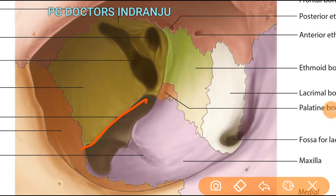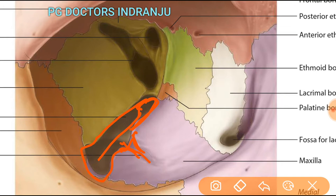The inferior orbital fissure continues as a canal which opens at the inferior margin of the orbit, known as the inferior orbital foramen. So the fissure becomes a canal and opens as the infraorbital foramen, with structures passing through it.